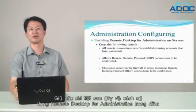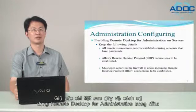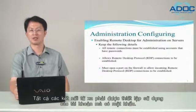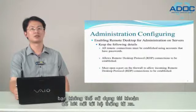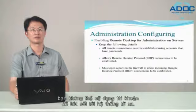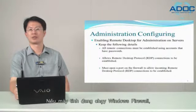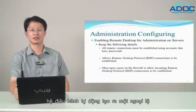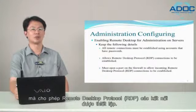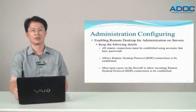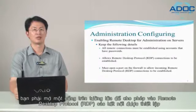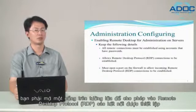Keep the following details about using remote desktop for administration in mind. All remote connections must be established using accounts that have passwords. If a local account on the system doesn't have a password, you cannot use the account to connect to the system remotely. If the computer is running Windows Firewall, the operating system automatically creates an exception that allows Remote Desktop Protocol (RDP) connections to be established. If you are running a different firewall, you must open the ports on the firewall to allow incoming RDP connections.